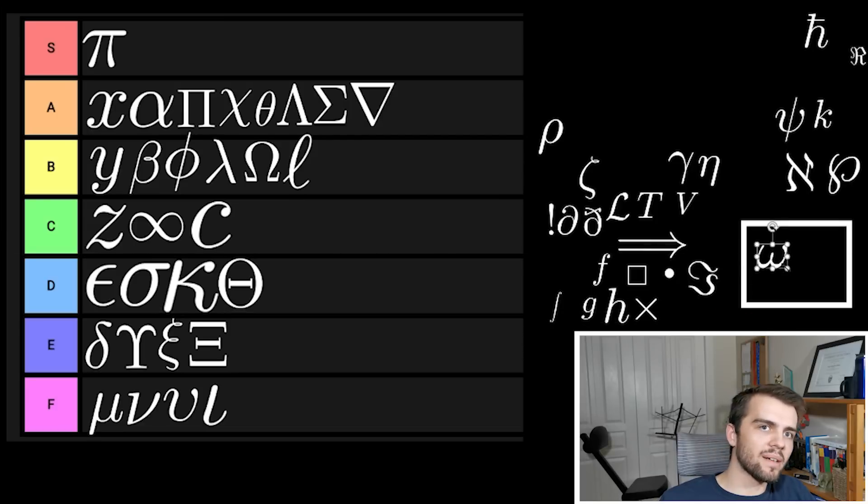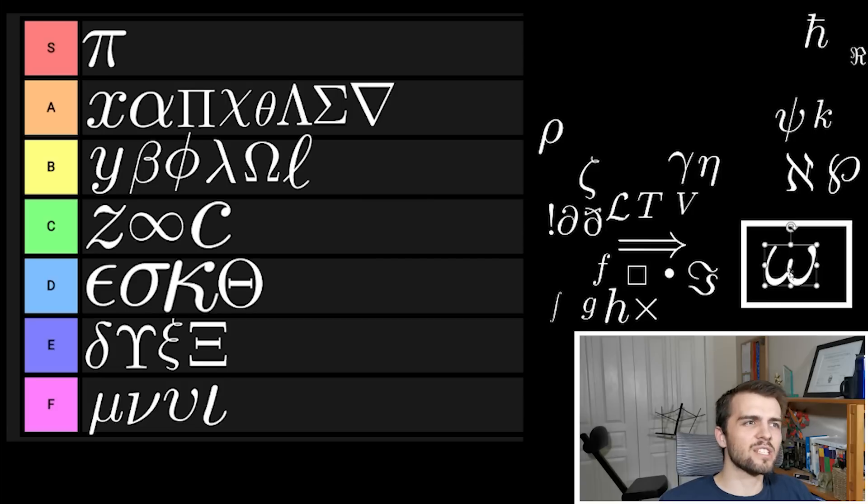Next we got the symbol lowercase omega. It looks like a W, kind of easier to write. It shows up quite a bit. It's nothing really special though. It's not the nicest symbol but it does the job well. I think omega belongs in C tier.